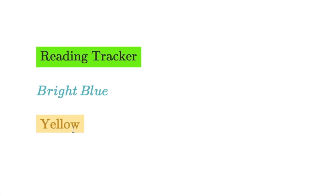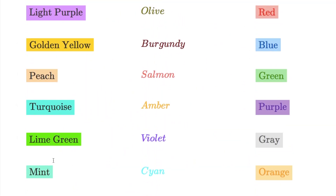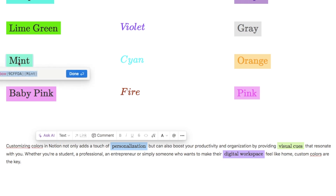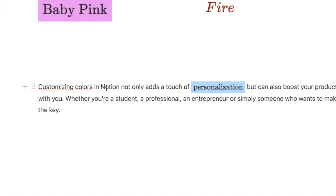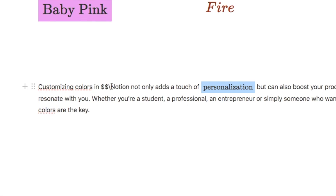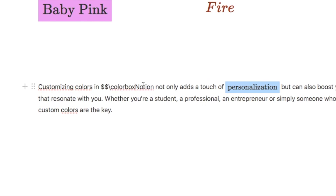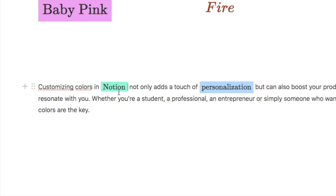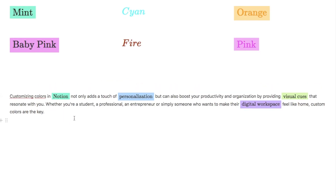You can really play around with these to create something unique — they look far more personalised than generic Notion colours. You can also add background colours to just inline blocks of text. For example, to highlight the word 'Notion' with a mint background, type two dollar signs, a backslash, 'colorbox', two curly brackets with the hex code, then wrap the word 'Notion' in curly brackets, add two dollar signs, and it converts into inline highlighted text.